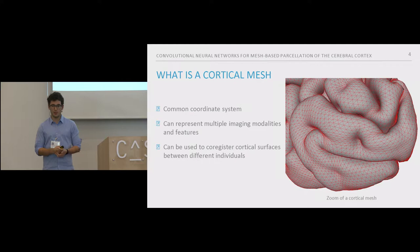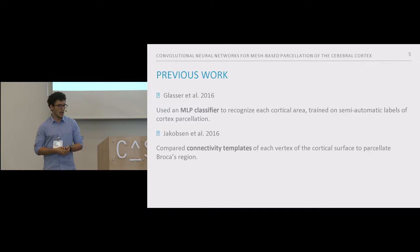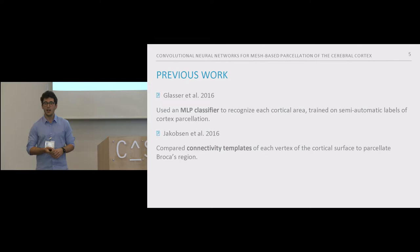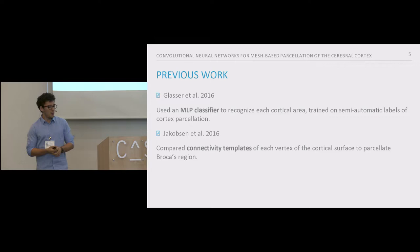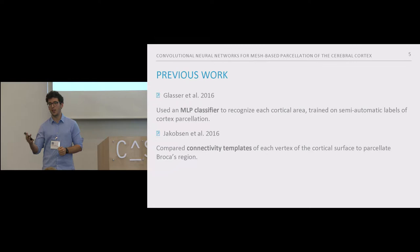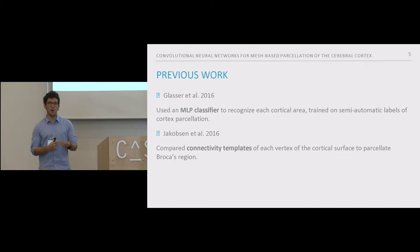There is some previous work on this topic. For example, Glasser et al. used an MLP classifier that processes node by node of the mesh in order to produce a label for each node and parcellate the mesh. Jacobson et al. used functional connectivity templates at each vertex and compared these against templates computed from the training set, assigning a label to each node. However, these two approaches do not fully exploit the underlying mesh structure because they process each node independently.